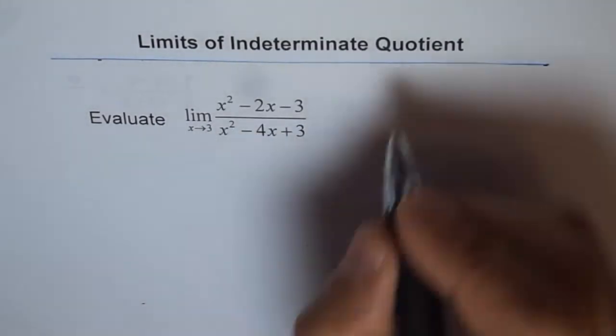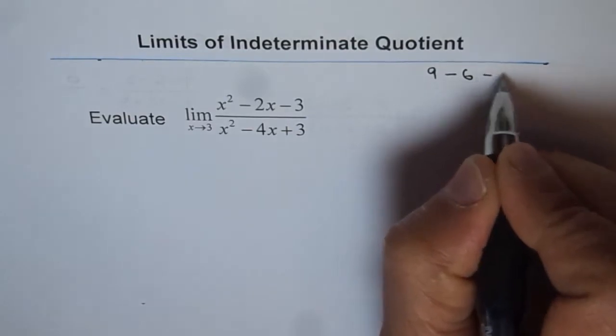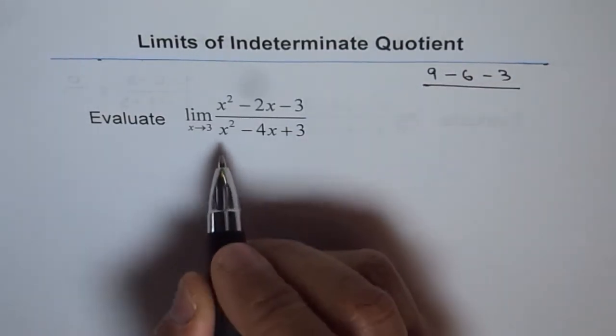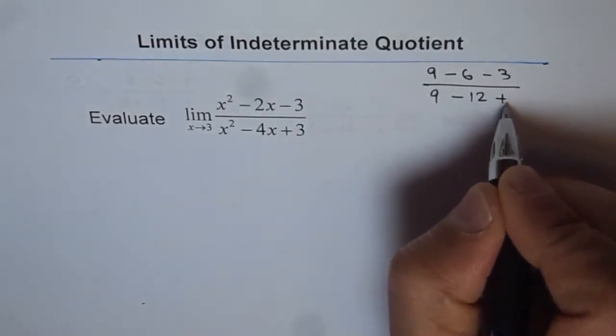So we get 3 squared, which is 9, minus 2 times 3 is 6, minus 3, divided by 3 squared, which is 9, minus 4 times 3 is 12, plus 3.